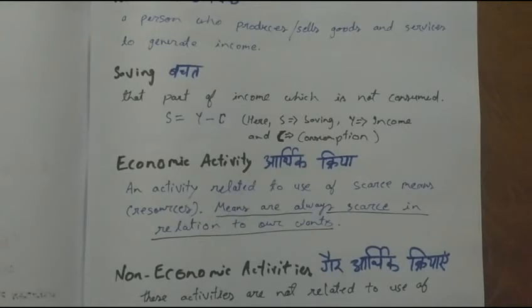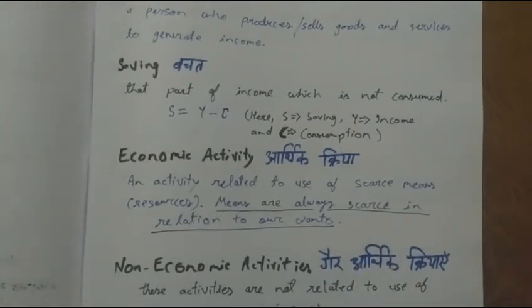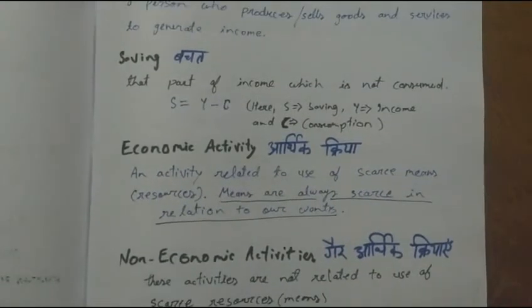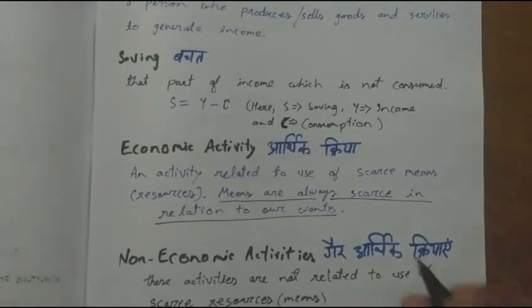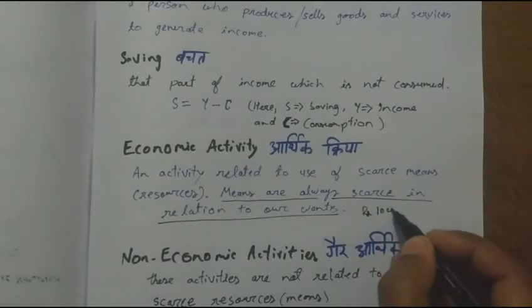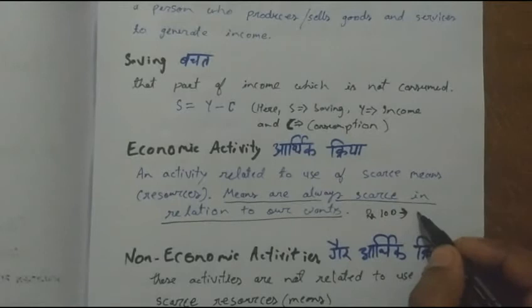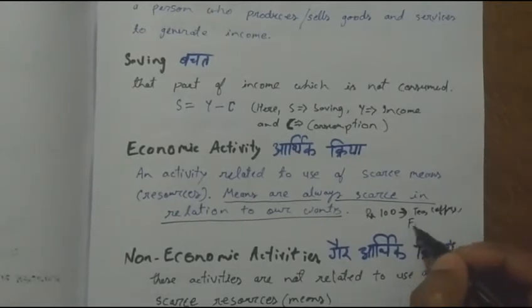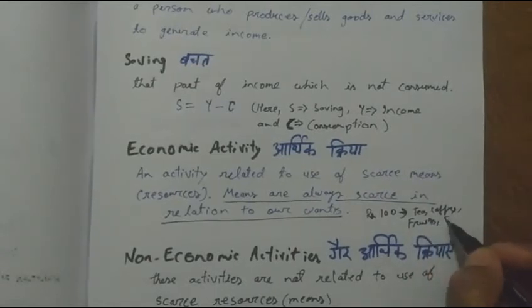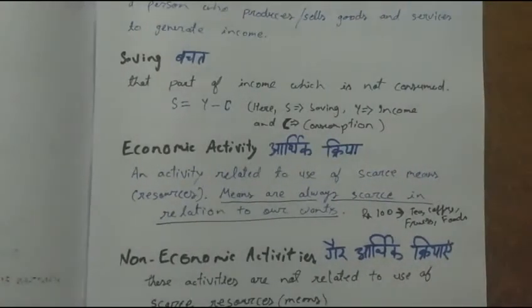For example, money is a resource by which we can buy many things. But if you have only rupees 100, you can buy any one thing — tea, coffee, fruits, food, etc. Human wants are unlimited; a person wants to buy and have many things. But at one time, he cannot buy everything.